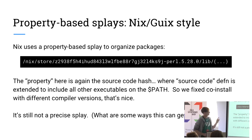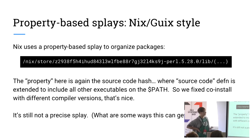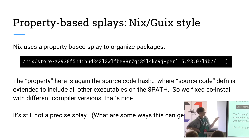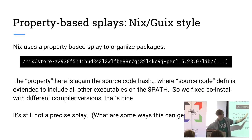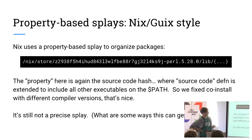What if I got better at this and came up with a description of a property where I have not just the source code hash, but all of the other executables on my path, all my compilers, as part of my property description as well? This is what the Nix and Guix distros do. This is really cool. This big hash includes not just the source code, but all of the other toolchains that were used in building it.